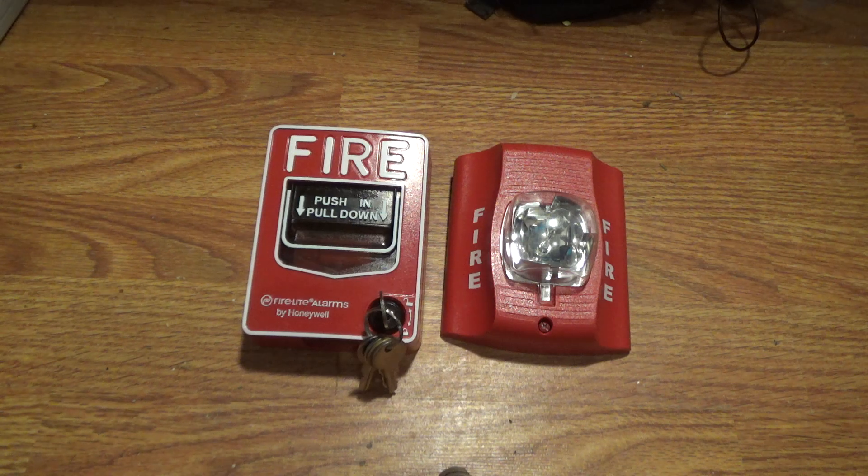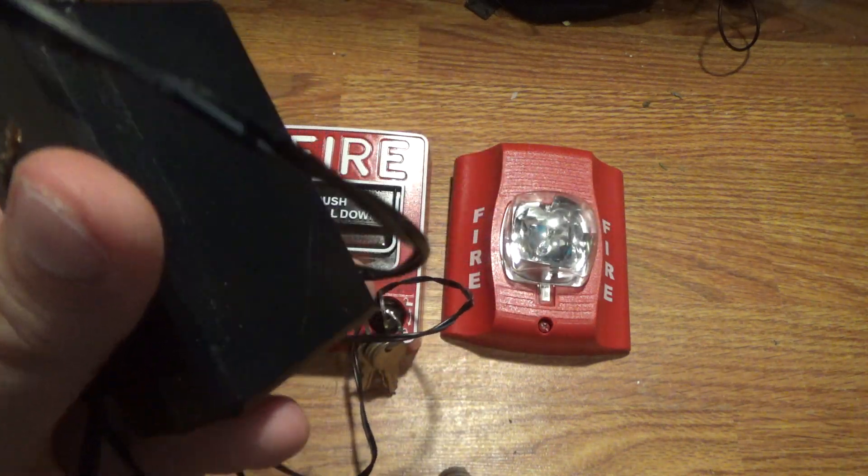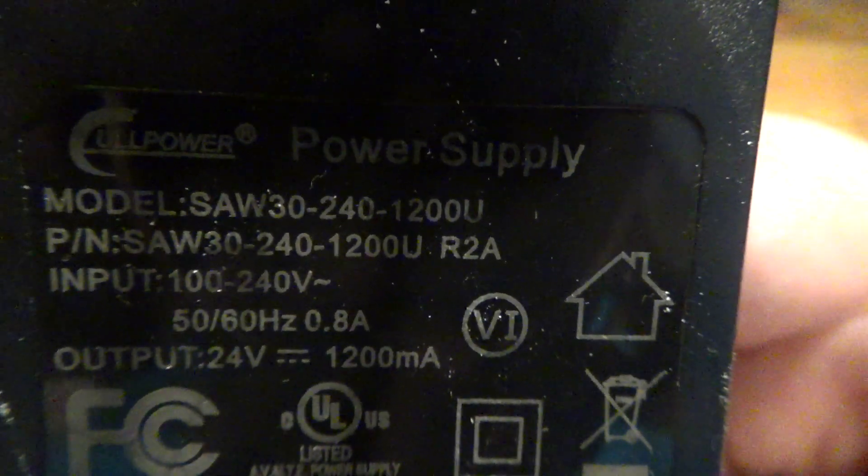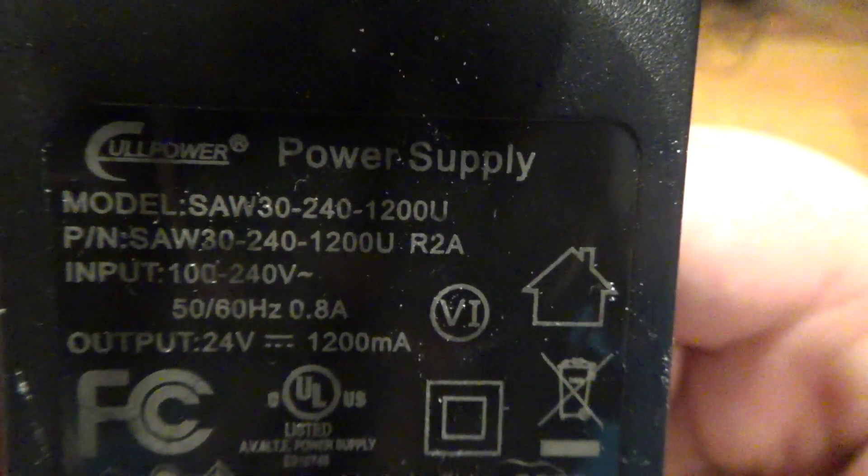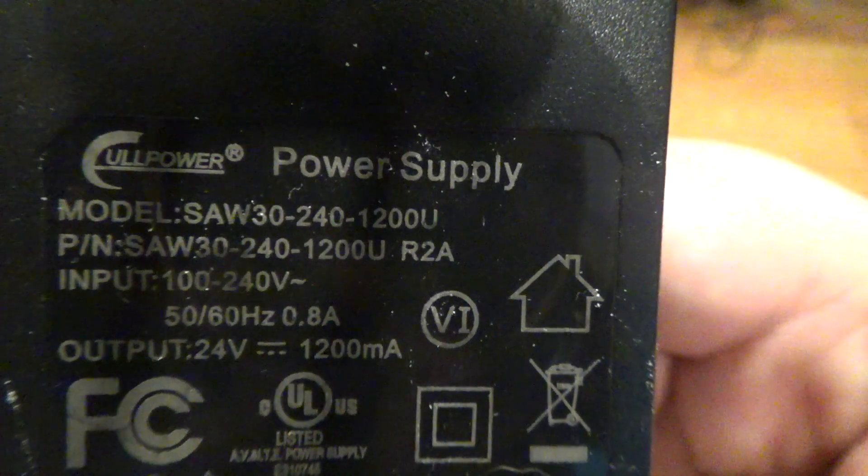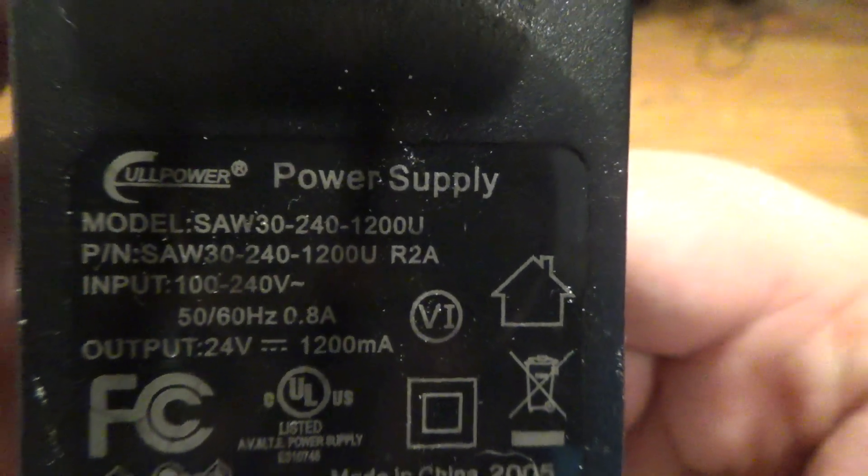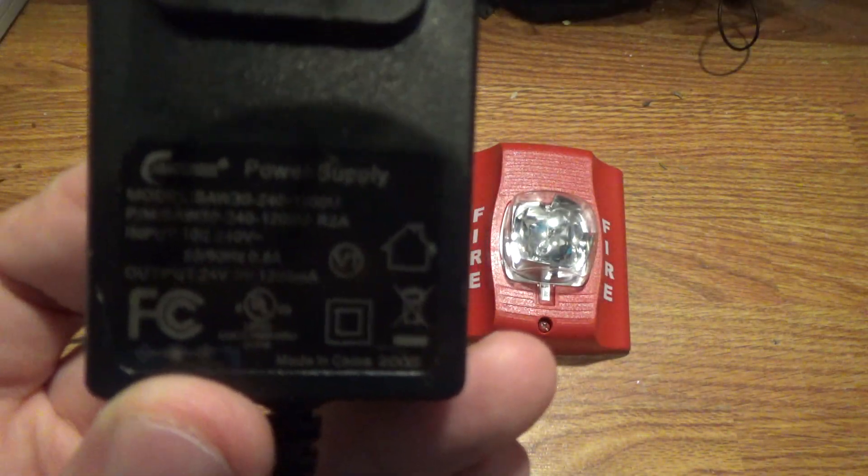So the first thing you want to do is get a 12 volt DC or 24 volt DC power supply. This one is 24 volts, but I don't know if you can see by the label, but this is a 24 volt DC power supply. It's a ULL power supply, and the model is SAW 30 dash 240 volt dash 1200U. So this thing puts out 24 volts filtered DC, so that's perfect. That's what we need.